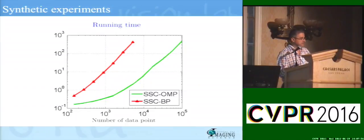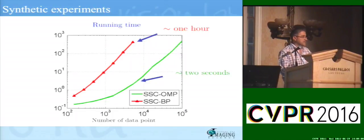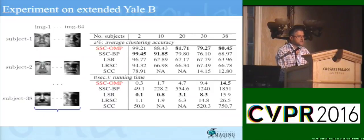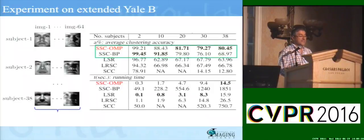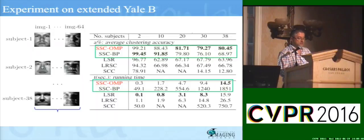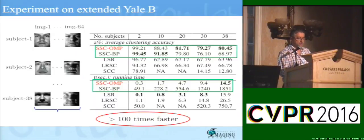The running time plot shows that L1 takes about one hour for 7,000 data points while the proposed OMP takes only about two seconds for the same data set. We also evaluated the proposed method on the task of clustering faces under varying illumination, with 38 different individuals under 64 different lighting conditions. The clustering accuracy table shows that our method does a little bit worse for two or ten subjects, but actually does better when the number of subjects is higher, achieving the best accuracy among existing methods while being about 100 times faster than L1 minimization.